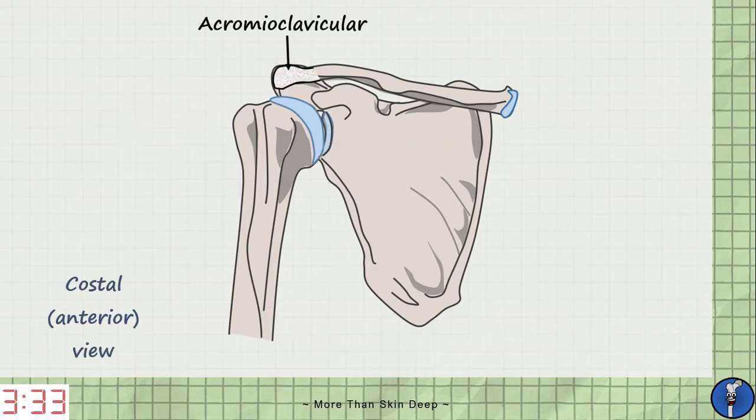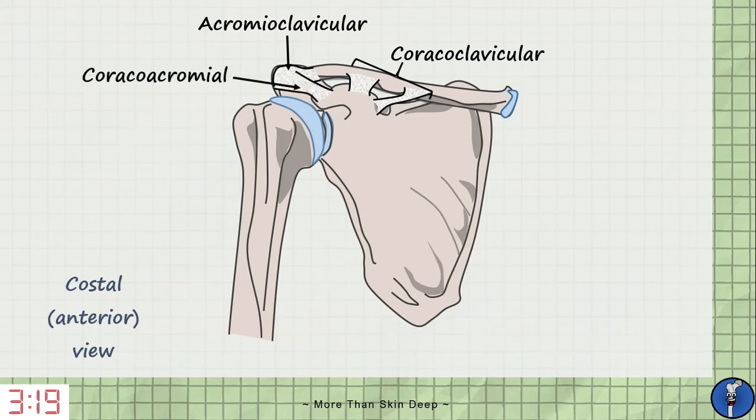The first of our ligaments is the simple acromioclavicular ligament which holds the acromion connected to the clavicle. Next we have the coracoclavicular ligaments joining the coracoid process to the clavicle and the coracoacromial ligament between the coracoid process and acromion.